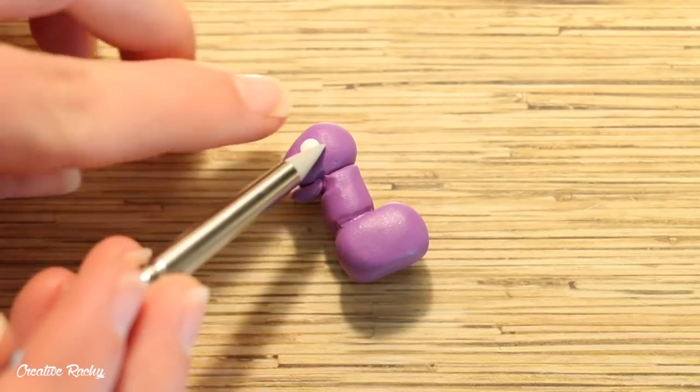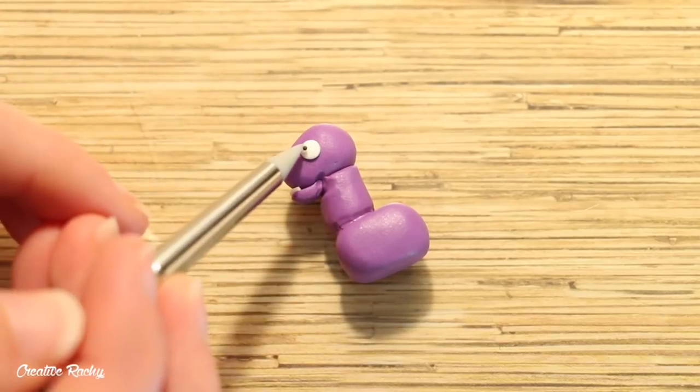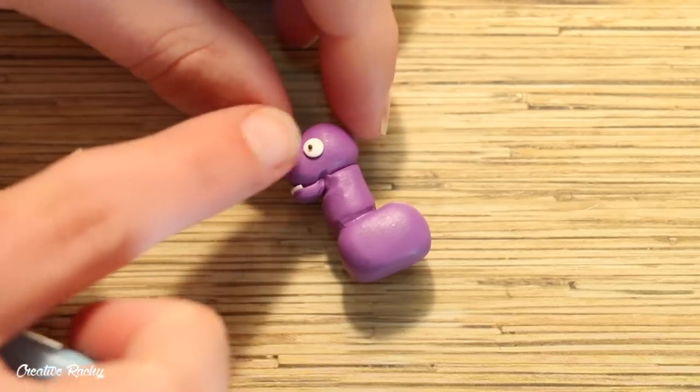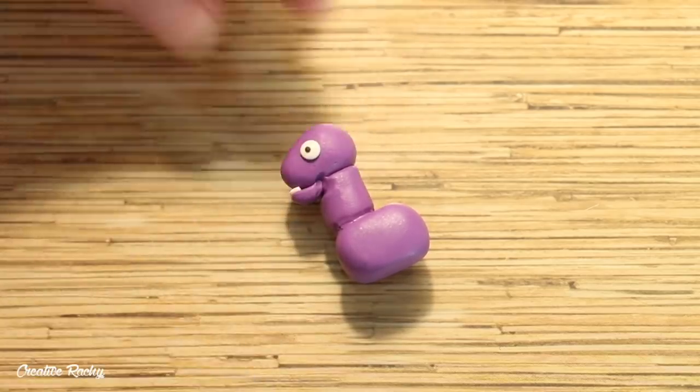Moving on to the other face details, I created an eye on each half of the face using a circle of white clay and by placing a small ball of black in the center.